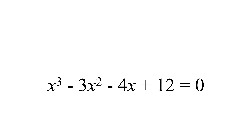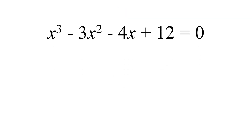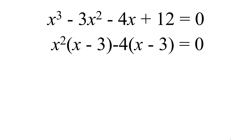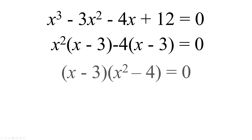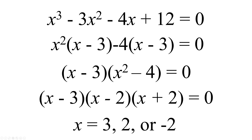Let's say x cubed minus 3x squared minus 4x plus 12 equal to zero. Since the highest exponent is n equal to 3, we call it a trinomial or cubic equation. In order to solve using pen and paper, factor out x squared from the first two terms, giving x squared times (x minus 3). Then factor out minus 4 from the last two terms, giving minus 4 times (x minus 3) equal to zero. Take (x minus 3) out, ending up with (x minus 3)(x squared minus 4) equal to zero. Factor further to get (x minus 3)(x minus 2)(x plus 2) equal to zero, so x equals 3, 2, or minus 2.